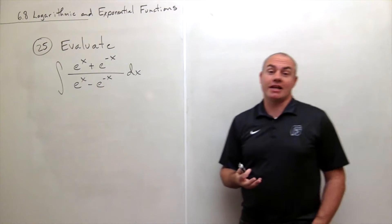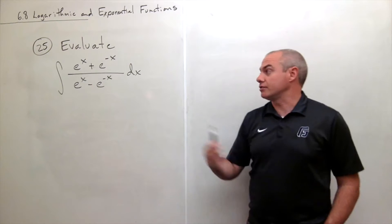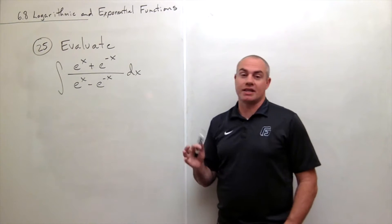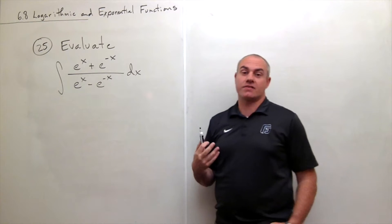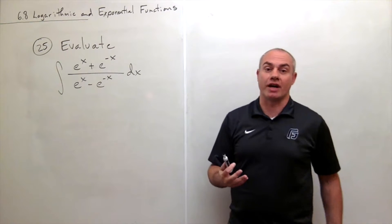Alright, at first glance this looks tricky because there are so many e to the x's and e to the minus x's floating around, but in reality this is very simple if you see the right trick.